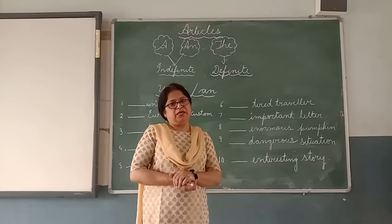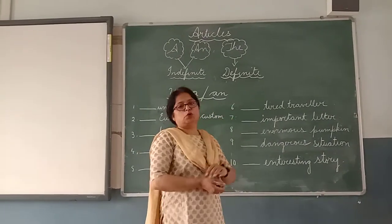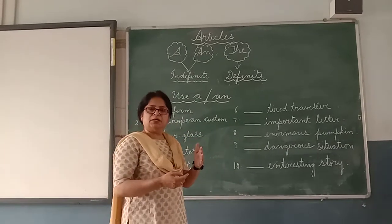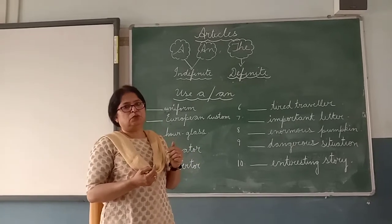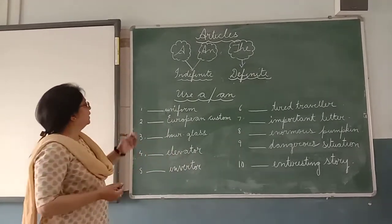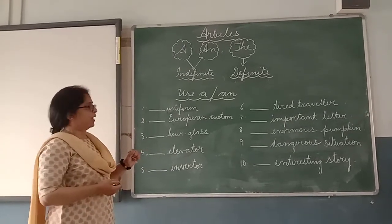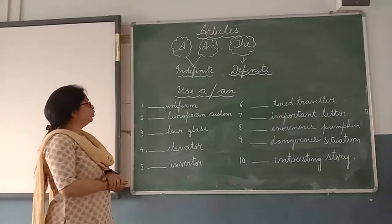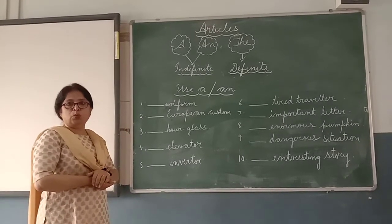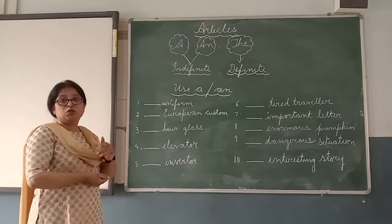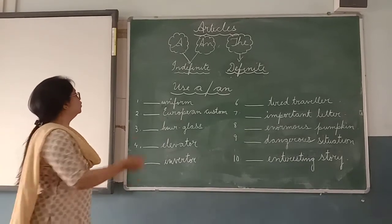Let's do Exercise A on page 13 of your Joyful Learning book. I am going to do this on the board, and before I give the answer, think of the answer in your mind. Let's fill in the blanks with the articles A or An. The first word is 'uniform' — it starts with a vowel but does not have a vowel sound; it has a consonant sound 'yu'. So we use 'a uniform'.